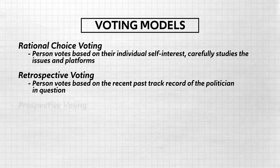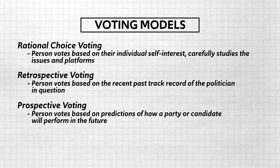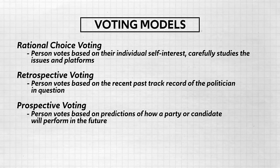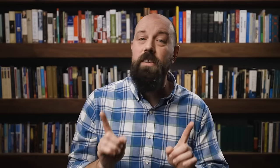The third model for voting behavior is prospective voting. This is when a person votes based on the predictions of how a party or candidate will perform in the future. So it's the opposite of retrospective voting, but still this kind of voter asks a similar question — instead of asking 'was this politician a turd,' they ask 'will this politician be a turd.' And in order to make this assessment, the voter considers how the candidate's campaign promises or proposed ballot initiatives will affect their lives after the election.